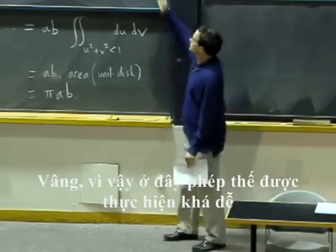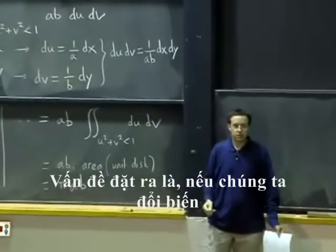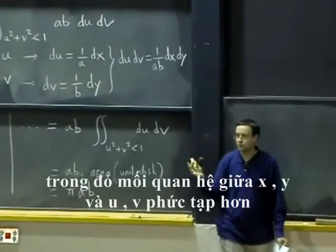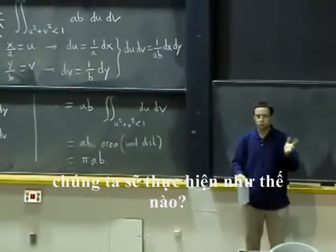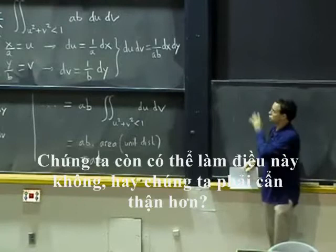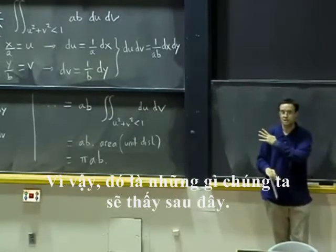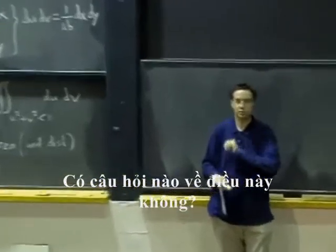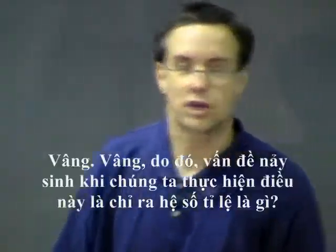OK, so here the substitution worked pretty easily. The question is, if we do a change of variables where the relation between x and y and u and v is more complicated, what can we do? Can we still do this or do we have to be more careful? And actually, we have to be more careful. So that is what we are going to see next. But any question about this first? No? OK.